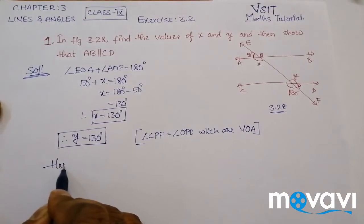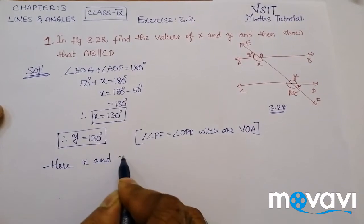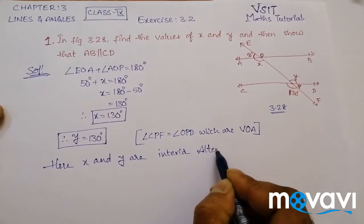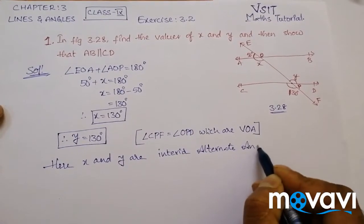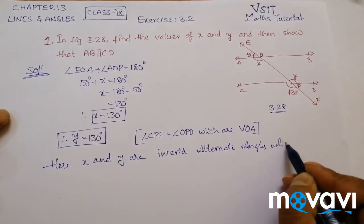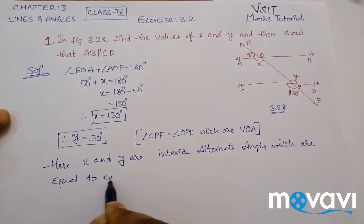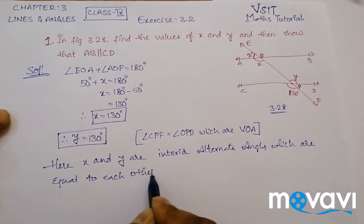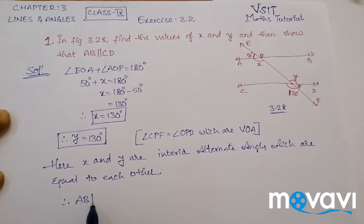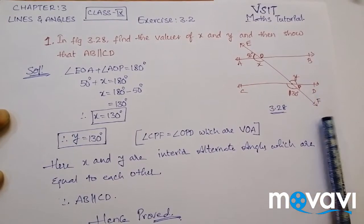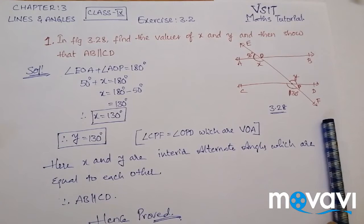X and Y are interior alternate angles which are equal to each other. Therefore AB is parallel to CD, hence proved. This is the procedure to solve the given problem. Thank you.